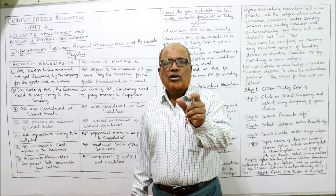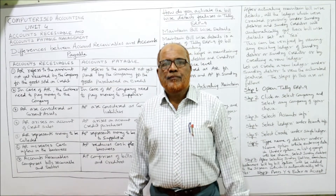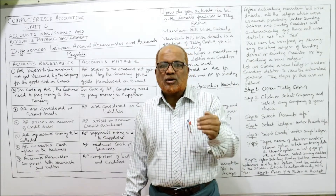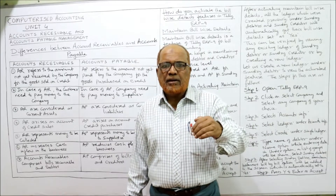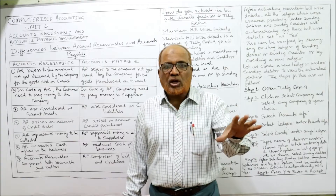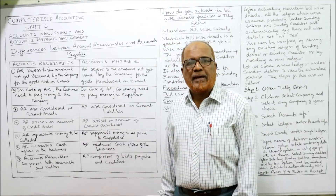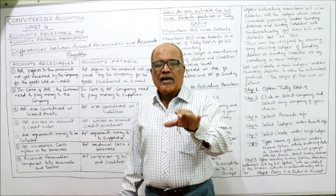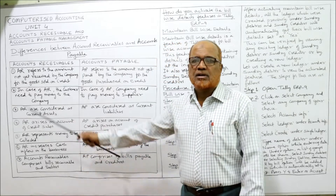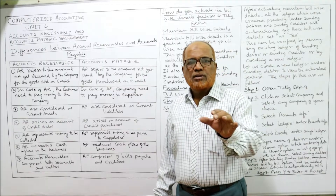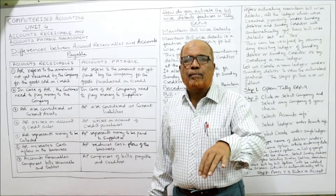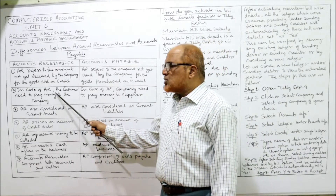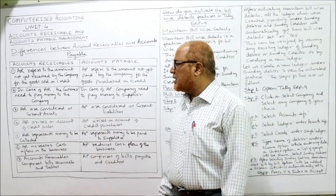Accounts payable is the amount not yet paid by the company for goods purchased on credit. When a business purchases goods on credit, it will not pay immediately — it pays after a period of time. So accounts receivable is the amount not yet received for credit sales, while accounts payable is the amount not yet paid for credit purchases.